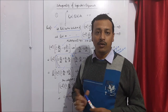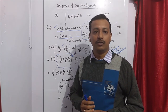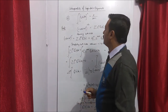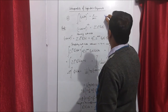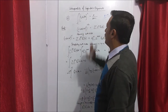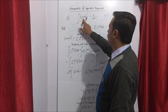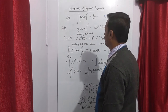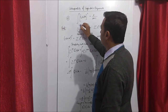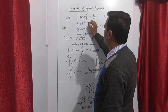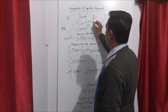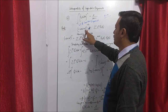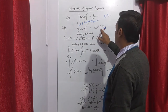Now we solve the second part: the orthogonal property value when n equals m, which gives 2 divided by 2n plus 1. For the second part, where n equals m, the property states that the integral from minus 1 to plus 1 of Pn(x) squared dx equals 2 divided by 2n plus 1. To prove this, we use the generating function of Legendre Polynomial: 1 minus 2xz plus z squared to the power minus half equals summation z to the power n Pn(x).